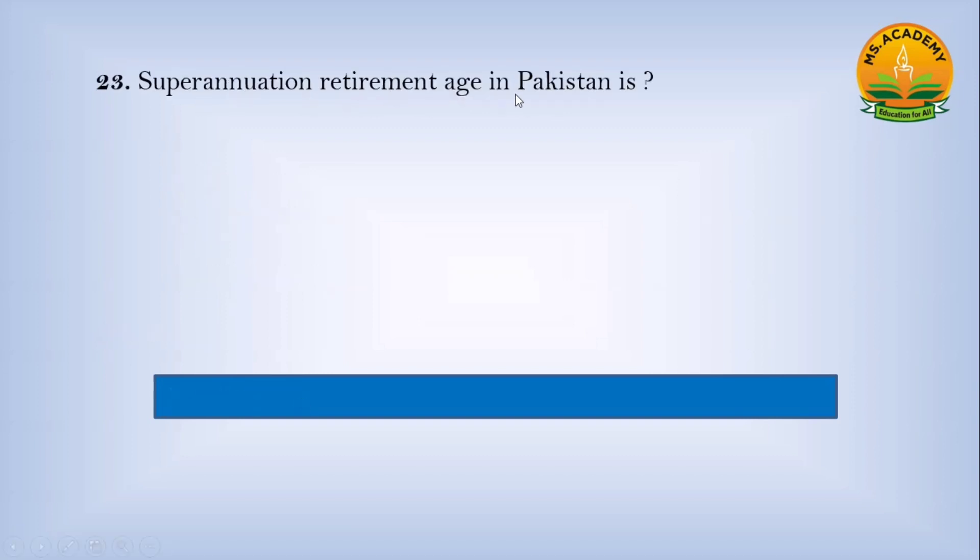Superannuation retirement age in Pakistan is: Option a) 60 years, Option b) 65 years, Option c) 75 years. Answer: a - 60 years.